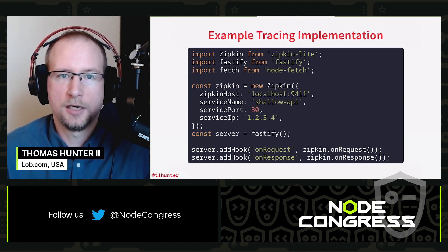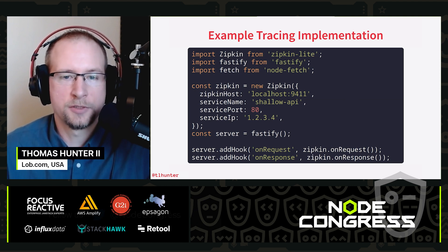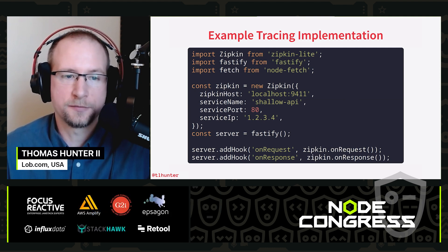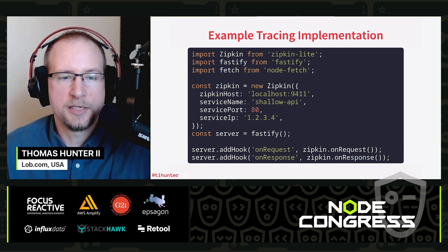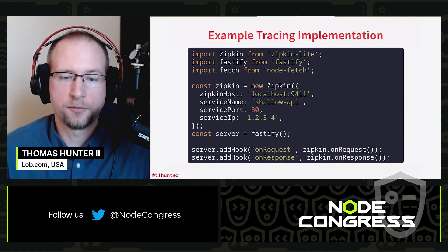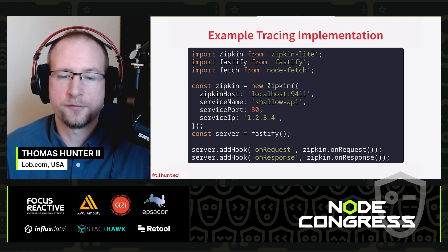Here's an example tracing implementation using the Zipkin Lite package with Fastify and the node-fetch package. We instantiate a Zipkin connection, specifying the host to send Zipkin information to. We also name the service and track the service's port and IP. We then instantiate the Fastify server and add two hooks: the first fires when a request is received, the second when the response is being sent. These middleware keep track of the start time of the request, generate a request ID, and transmit all that information to the central Zipkin server.